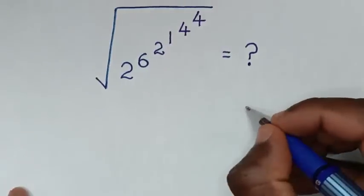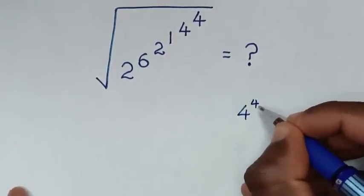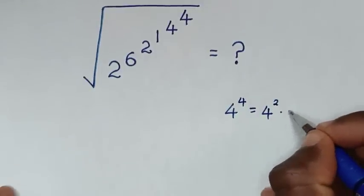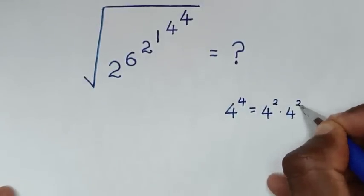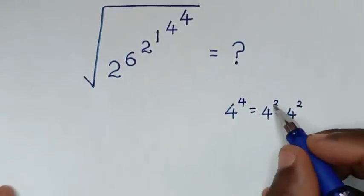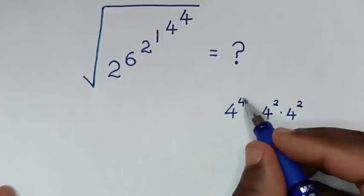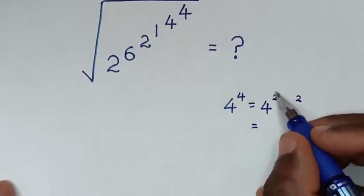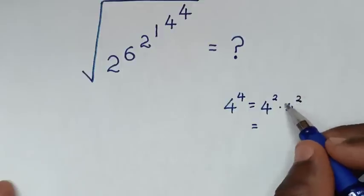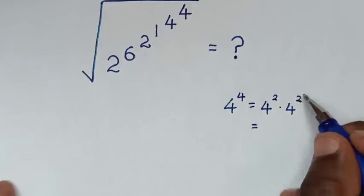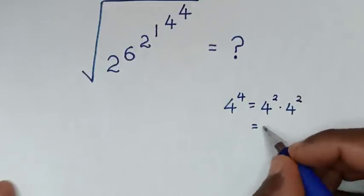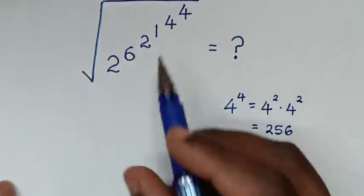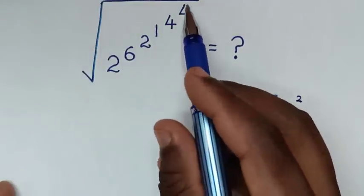From 4 power of 4: this equals 4 power of 2 times 4 power of 2, which equals power of 2 plus power of 2, giving power of 4. Then 4 power of 2 is 16, times 4 power of 2 is 16, so 16 times 16 is 256. Therefore 4 power of 4 is 256.